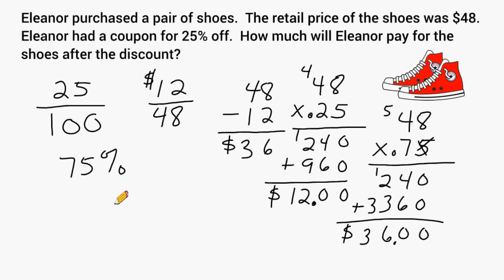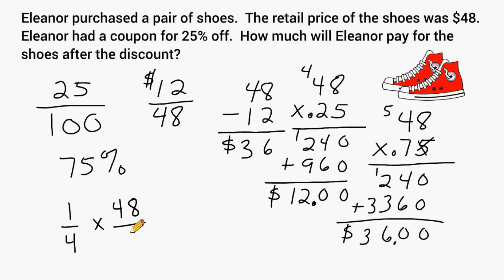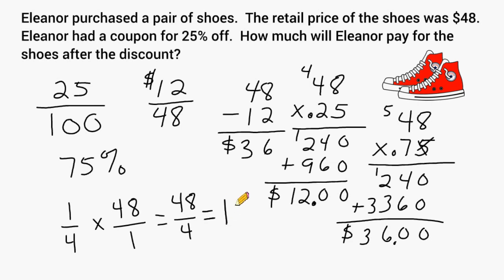Another way we could have solved this problem is by understanding that 25% means one-fourth. So we could have taken 1/4 and multiplied it by the original price of 48, but we would have to write 48 as a fraction by placing a 1 as its denominator. The product of the numerators is equal to 48, and the product of the denominators is 4, and 48 divided by 4 equals 12. So that is another way to figure out what 25% of 48 is.